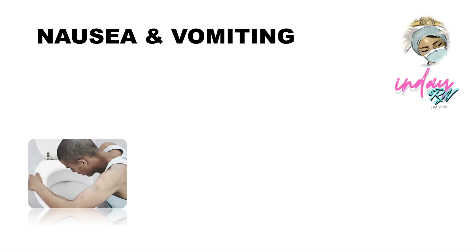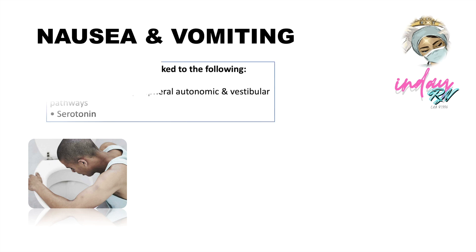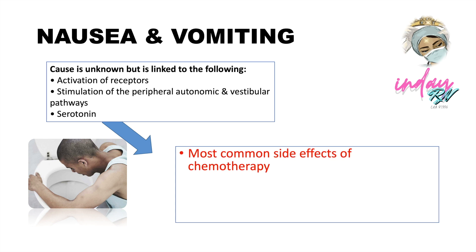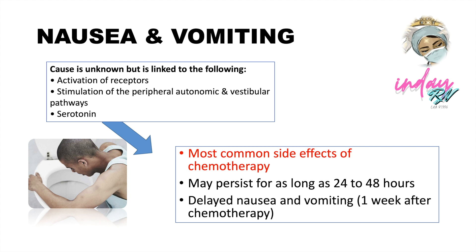The next side effect is nausea and vomiting. The exact cause is not fully known, but it is linked to the activation of receptors, stimulation of peripheral autonomic and vestibular pathways, and activation of serotonin. Vomiting is the most common side effect of chemotherapy and may persist for as long as 24 to 48 hours. For delayed nausea and vomiting, patients can suffer symptoms 1 week after chemotherapy.